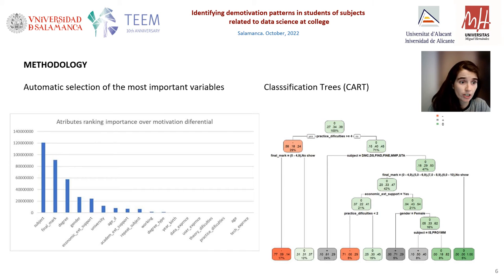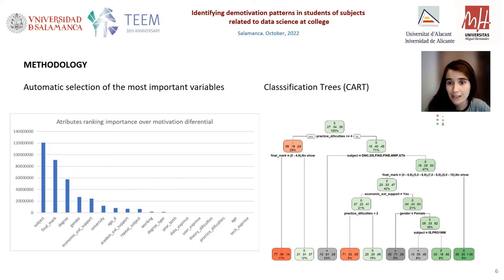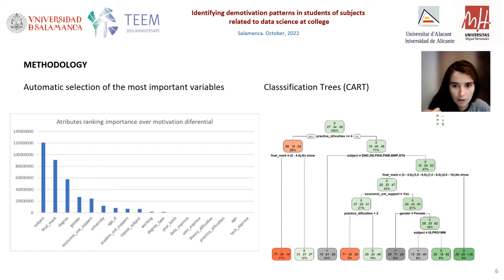We propose a methodology based on automatic selection of the most important variables — which are the subject, the final marks, or the degree — and propose a classification tree to predict increasing, decreasing, or stable motivation of students based on variables such as the difficulty of the practicals, the final mark, or the subject itself.